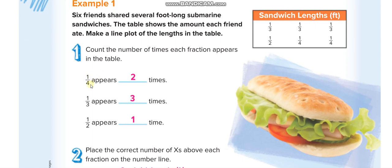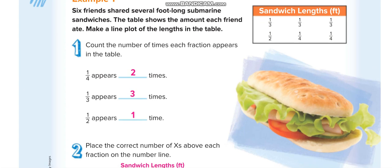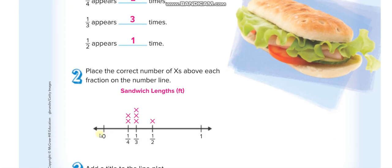You have to show this data on a line plot. First, count: how many one-fourths — two; how many one-thirds — one, two, three — three; and how many halves — one. All the fractions are between zero and one, no mixed numbers. So we draw a line starting at zero and ending at one, with one-half in between, and one-quarter between zero and one-half.